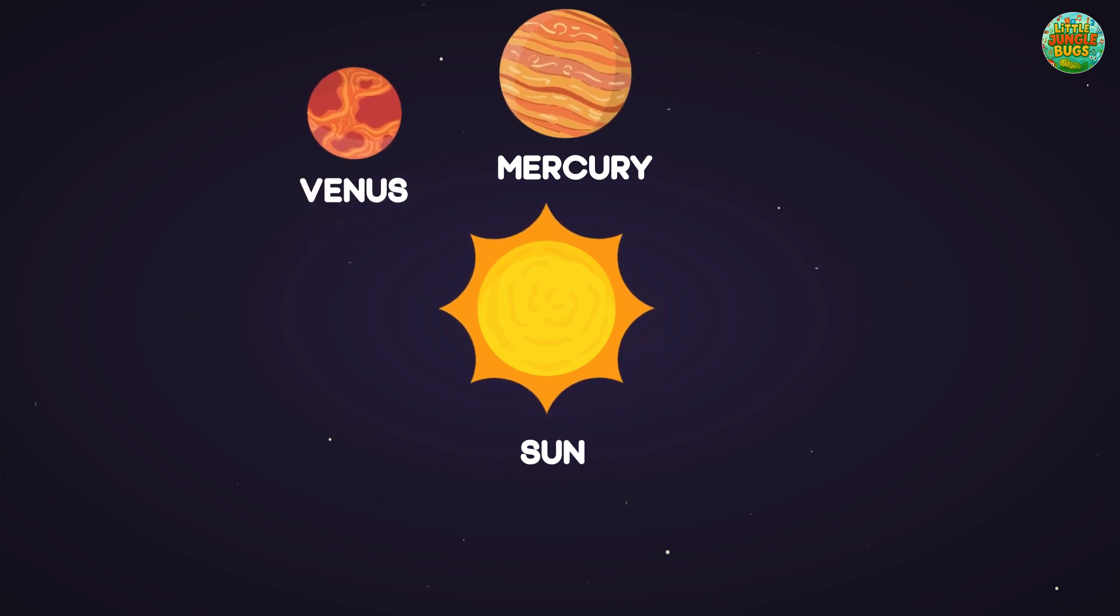Venus. Venus is the second planet from the sun. It's super hot and covered with clouds. Some people call it Earth's twin sister.